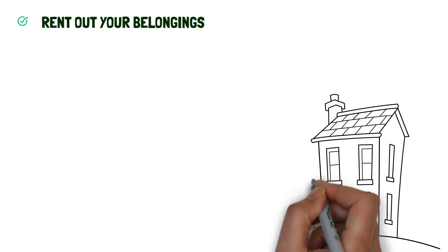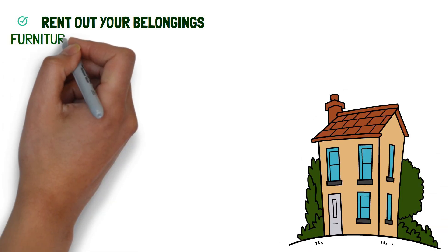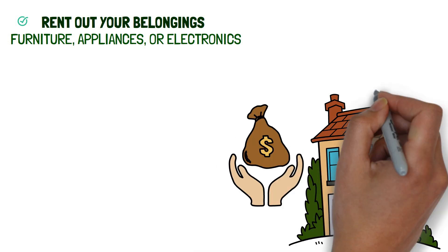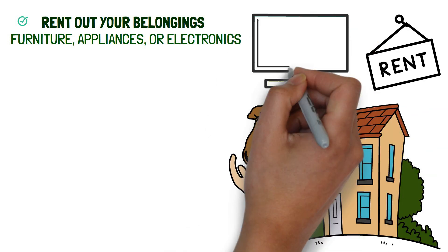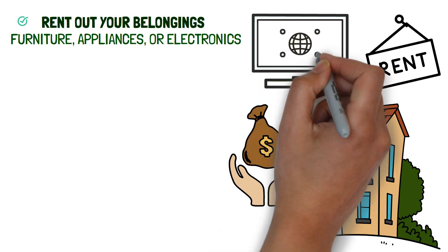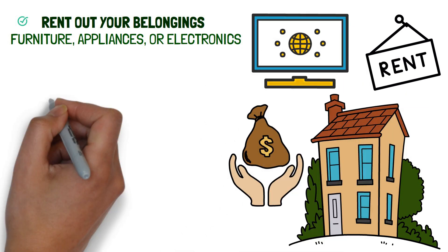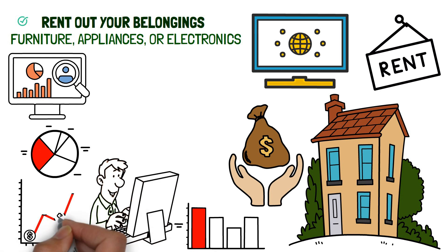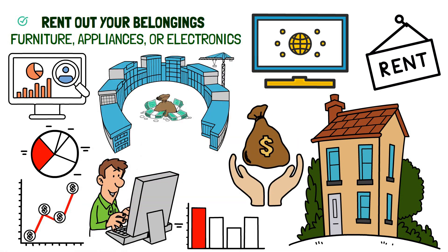Number 4: Rent Out Your Belongings. If you have items around the house such as furniture, appliances, or electronics that you don't use, you can make money by renting them out. Websites like Splash and Neighbor provide a platform for you to easily rent out and manage your items. This is a great way to make money online with minimal effort, as the company handles all the payments and booking.